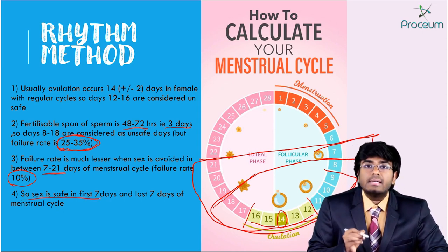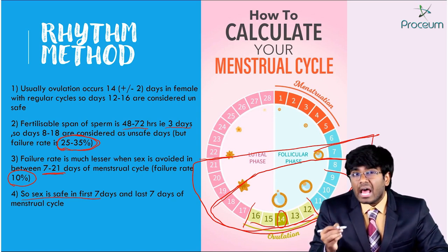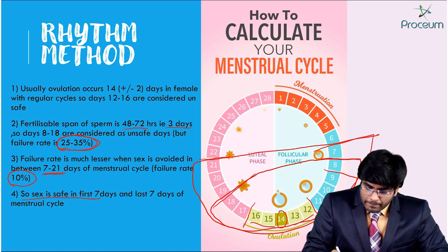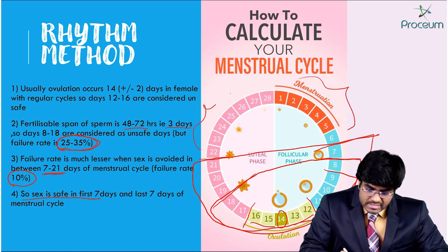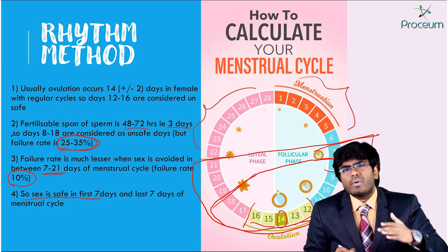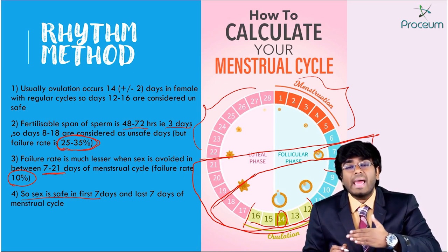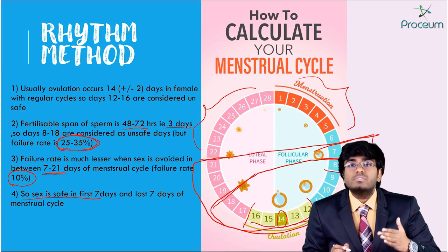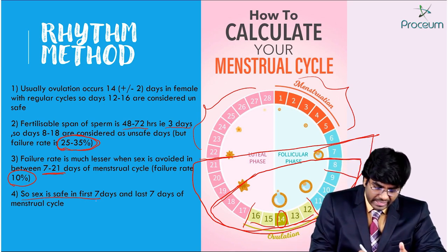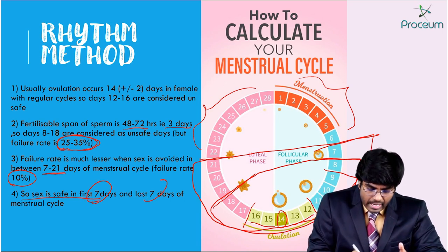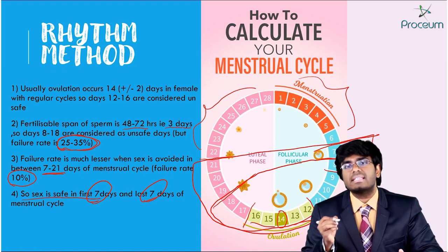Sex is allowed in the first 7 days and in the last 7 days of the cycle. For almost half of the month, there is no sexual activity. This is called programmed sex. Sex is safe in the first 7 days and last 7 days, but from day 7 to 21 it is unsafe.